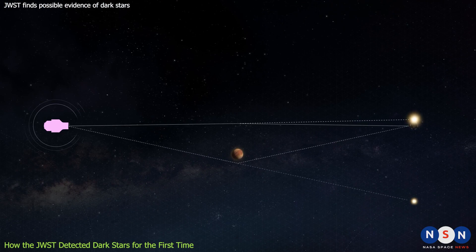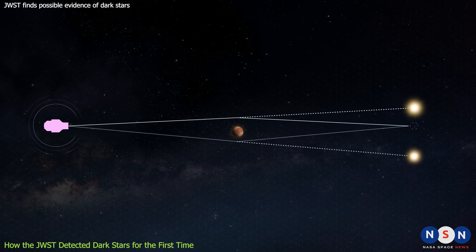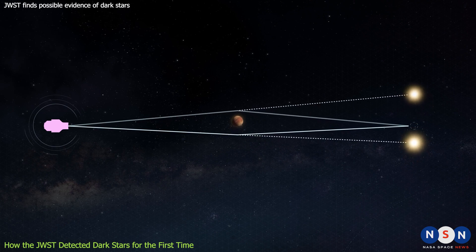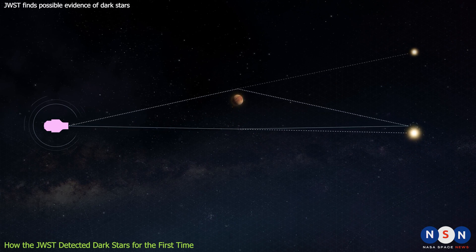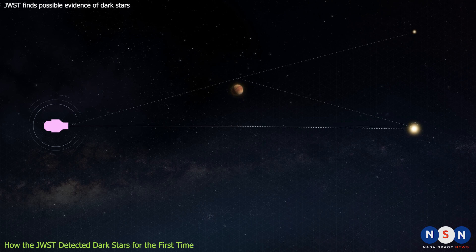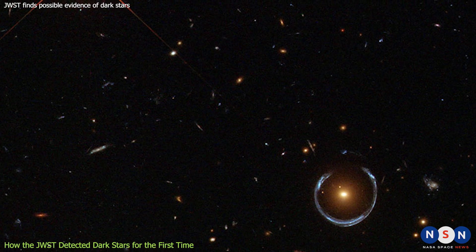They used a technique called gravitational microlensing to amplify their signals. Gravitational microlensing is a phenomenon where the light from a distant object is bent and magnified by the gravity of another object in front of it. This creates a temporary brightening effect that can reveal hidden or faint objects.